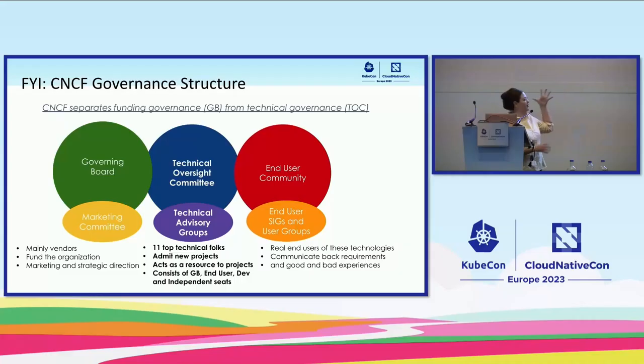One good thing of having a diverse set of members in the TOC is that some members come from end users, not necessarily from projects. This gives us different views to balance the interests of both adopters and end users alongside the projects. The technical oversight committee is composed of people pulled from these different groups.